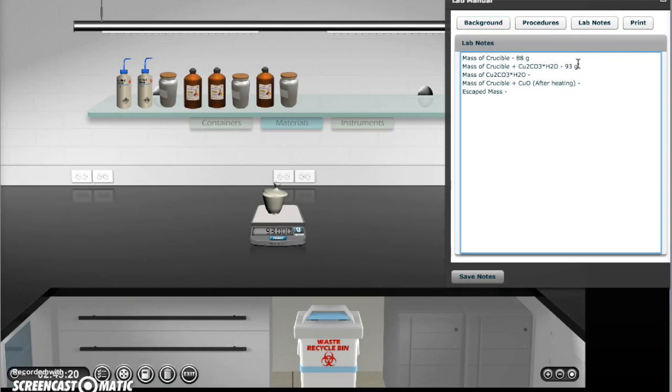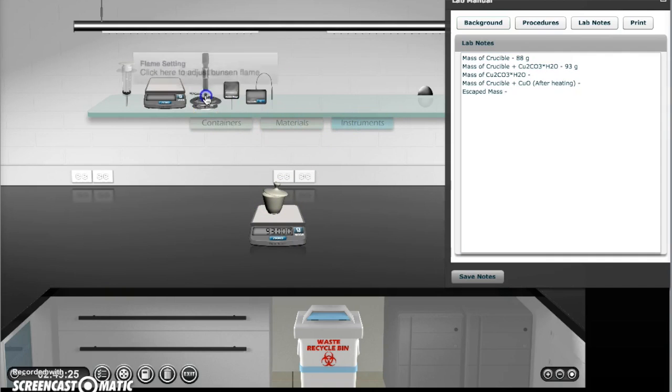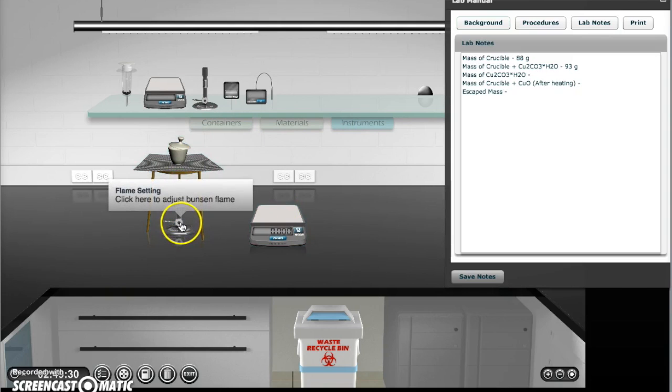Then go to the instruments tab and take out a Bunsen burner. The Bunsen burner is used to apply heat to the crucible. Click and drag the crucible containing the hydrate to the Bunsen burner. A stand with a metal wire crucible tray should appear automatically.